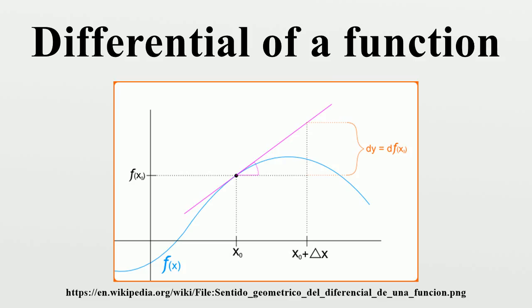The differential is defined in modern treatments of differential calculus as follows. The differential of a function f of a single real variable x is the function df of two independent real variables x and delta x. The arguments may be suppressed, i.e., one may write df or simply df. If y equals f, the differential may also be written as dy. Since dx equals delta x, it is conventional to write dx equals delta x, so that the following equality holds. This notion of differential is broadly applicable when a linear approximation to a function is sought, in which the value of the increment delta x is small enough.